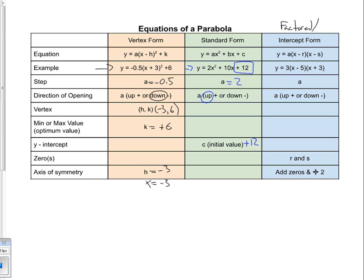The last form is the factored or intercept form of a quadratic relationship. It again gives you the a value — in this example, a = positive 3, so the parabola opens up. The reason intercept form is so useful is that it lets you find the zeros directly. In this example, the zeros are x = positive 5 and x = negative 3. To find the axis of symmetry, we calculate (5 + (−3)) ÷ 2 = 2 ÷ 2 = 1, so the axis of symmetry is x = 1.